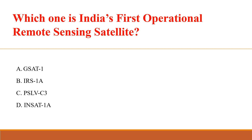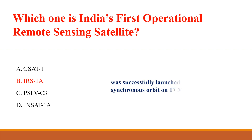Which one is India's first operational remote sensing satellite? Answer: P. IRS-1A. It was successfully launched into a polar sun-synchronous orbit on 17th March 1988.